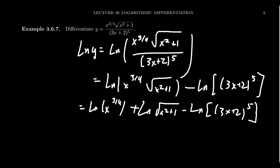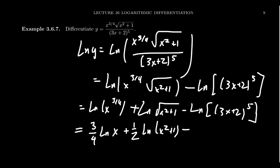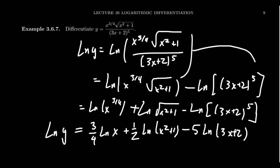Finally, we pull the exponents out in front. The natural log of x to the three-fourths becomes three-fourths times the natural log of x. The square root gives a one-half exponent, so we get one-half times the natural log of x squared plus one. And the fifth power pulls out as five times the natural log of three x plus two. So the natural log of y equals three-fourths times the natural log of x, plus one-half times the natural log of x squared plus one, minus five times the natural log of three x plus two. With practice, you could go from the original to this expansion immediately.